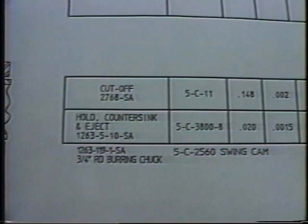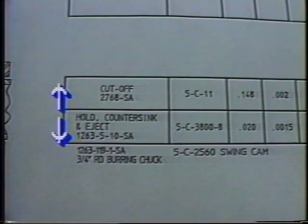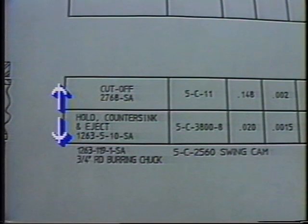Required tool holders, spindles, and idler arrangements will be identified either in this block or directly above or below it. It should be noted that in the fifth position the crossworking and endworking operations are reversed — that is, the crossworking operations are listed in the top box and the endworking in the bottom.